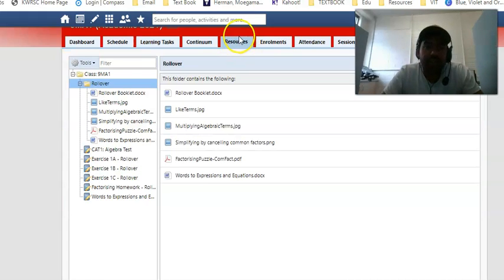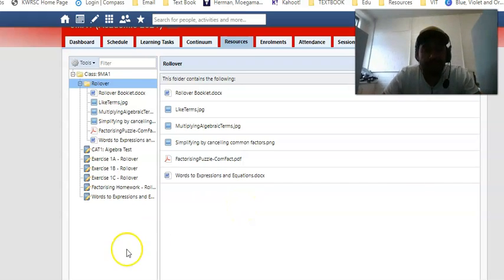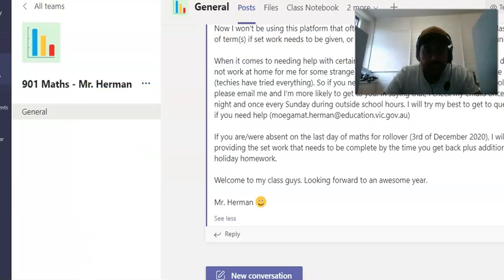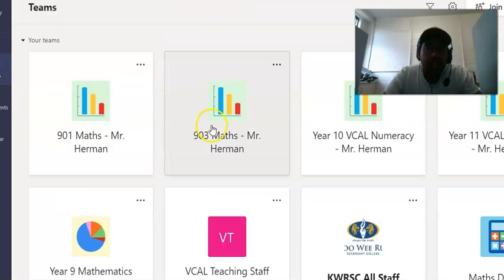The resources in the resources tab can be found in the rollover folder. Here you have the rollover booklet, which is all the questions from 1A, B and C, a few sets of examples that I gave while I was away during the days of rollover, the first set of homework that I gave within the rollover, and also the words to expressions and equations. This is the holiday homework that you've been given. This can all be found here and also can be found within the learning task. And I'm also going to make it available within Microsoft Teams.